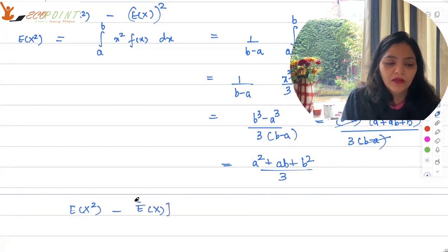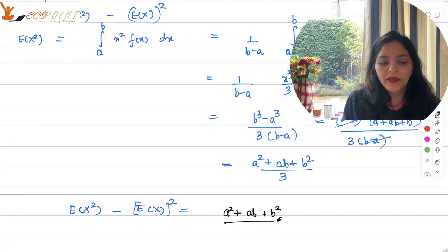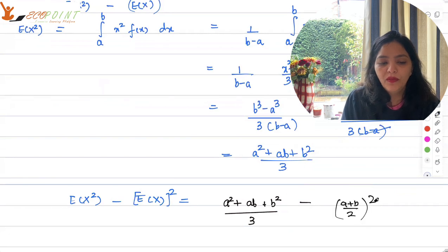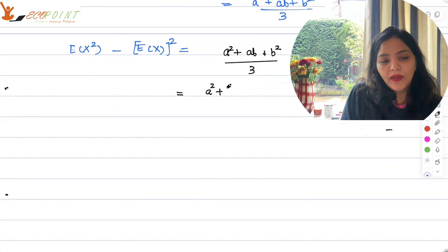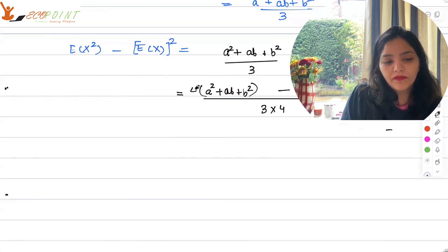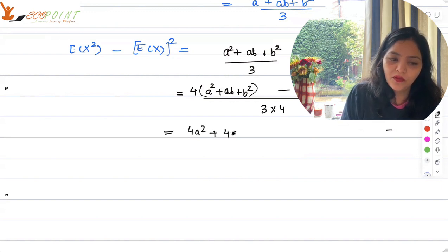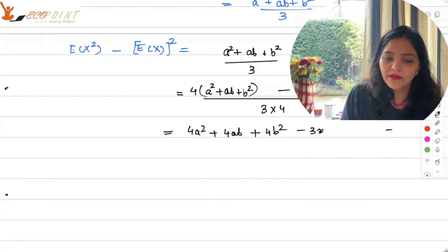So e x square minus e x whole square gives you a square plus ab plus b square upon 3 minus a plus b upon 2 whole square. So from here what we will get is a square plus ab plus b square minus - I am going to take the LCM. So remember this is square. So 3 into 4. So 3 into 4. So this will be multiplied by 4 and this is multiplied by 3. 3 times a square plus 2ab plus b square. So here 4a square plus 4ab plus 4ab plus 4b square minus 3a square minus 6ab minus b square